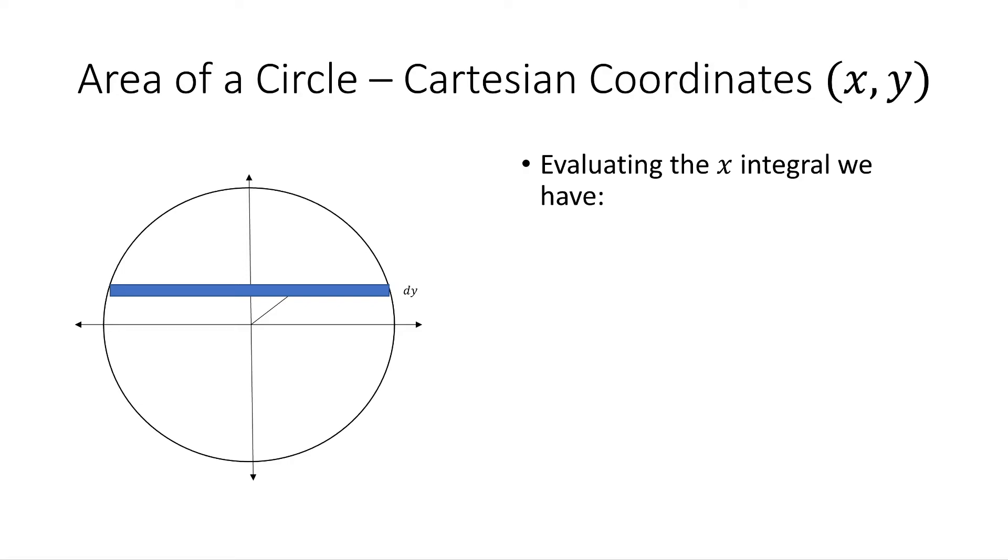So evaluating the first integral, the x integral, we have the following, which should make sense, which is twice the distance, because it's symmetrical. Distance to the left of the y-axis should be square root of r squared minus y squared, and the distance to the right is the same thing.